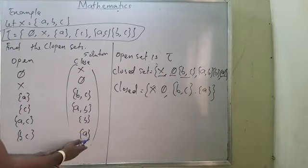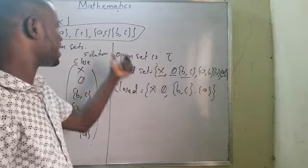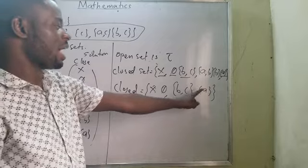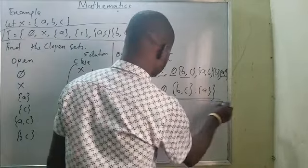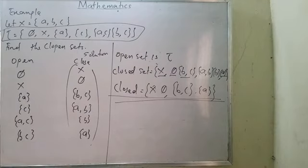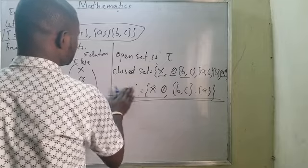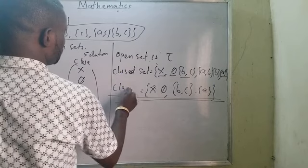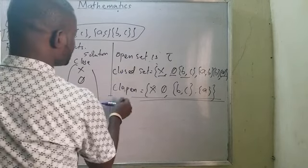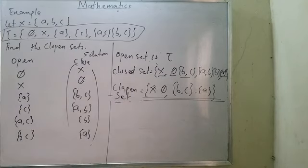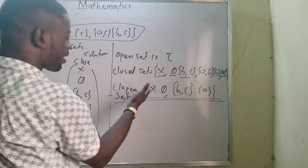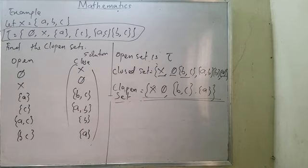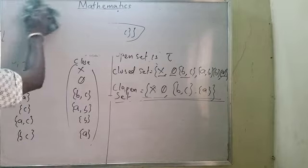Please take note of that. The closed sets listed include X, ∅, {B, C}, {B}, and {A}. But the clopen sets are specifically those that are also found in τ — meaning X, ∅, {B, C}, and {A}. That is my final answer for the clopen sets. Now look at this very important statement that you need to be careful with when talking about clopen sets.